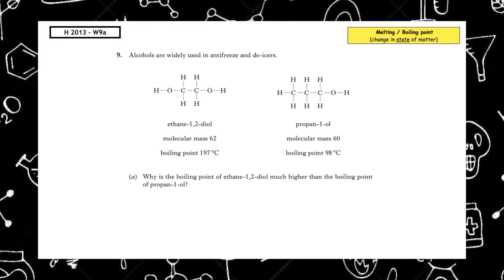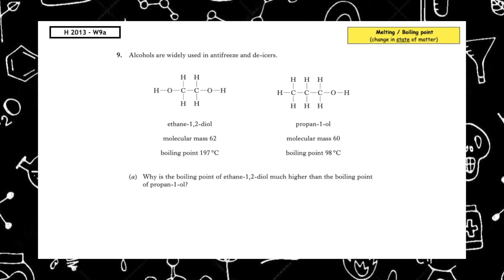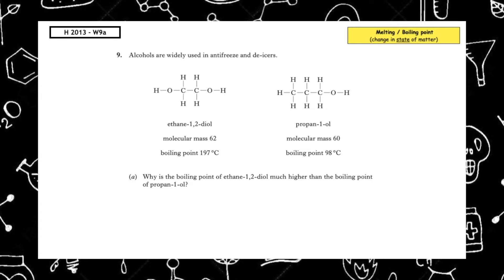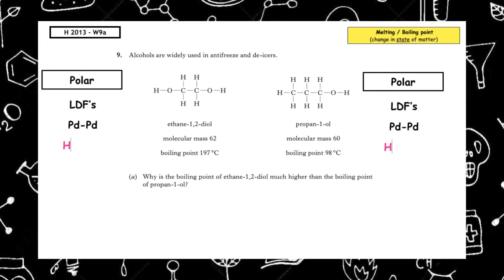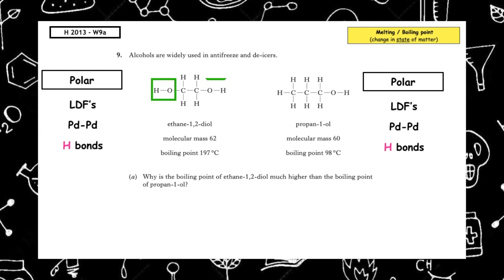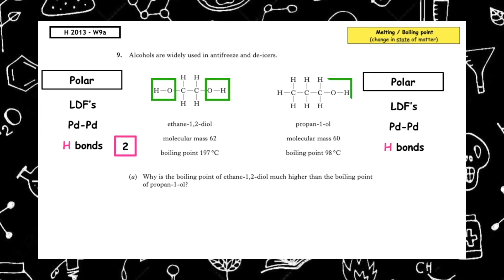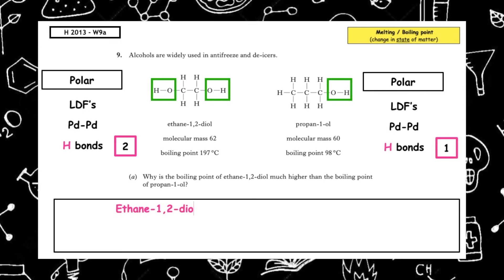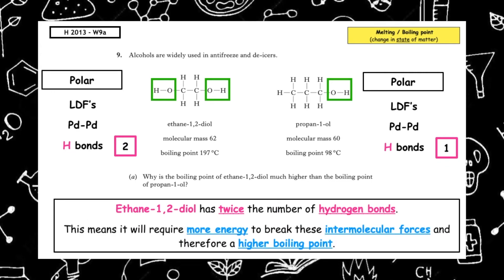This past paper question is from The Higher, 2013, written 9A. Why is the boiling point of ethan-1,2-diol much higher than the boiling point of propan-1-ol? Both structures are polar; they have London dispersive forces, permanent dipole interactions, and hydrogen bonds. However, ethan-1,2-diol has two hydroxyl groups, meaning it can exhibit two hydrogen bonds, whereas propan-1-ol only has one hydroxyl group and can give off one hydrogen bond. Because ethan-1,2-diol has twice the number of hydrogen bonds, it requires more energy to break these intermolecular forces and therefore has a higher boiling point.